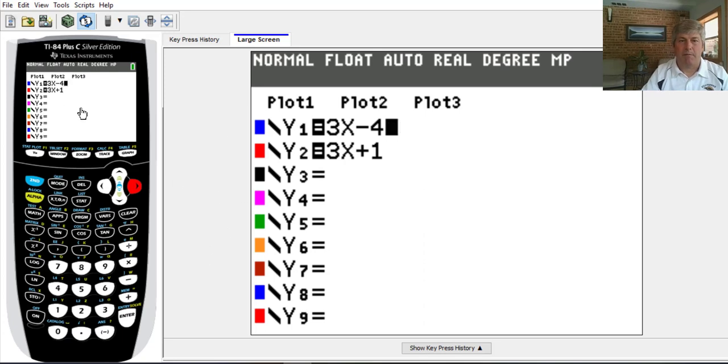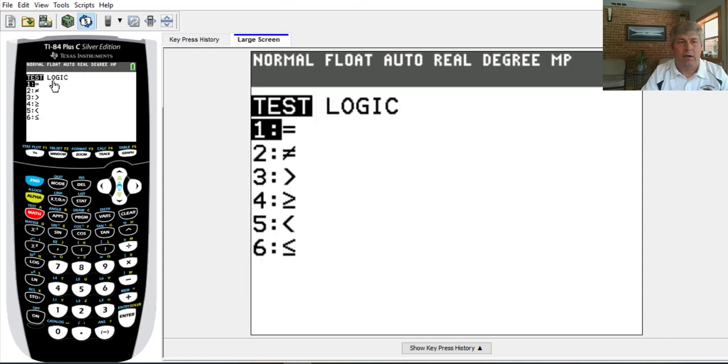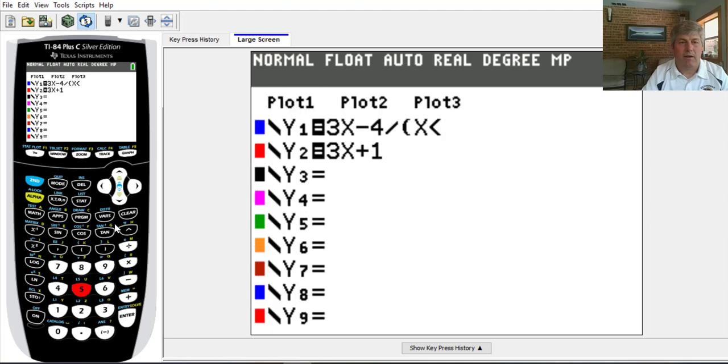If I pull up my graphing calculator, I can see here I've got my functions in 3x minus 4 and 3x plus 1. So that division symbol you saw is divided by, and then do your parentheses, and we want for the x's that are less than 0, so x. And here's the sneaky part, we've got to find the less than symbol. So we go to 2nd, Math, Math, and we have our inequality symbols, and we're going to do x's less than 0, so that's 5, and put in our 0, close our parentheses.